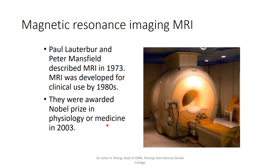Let's move on to magnetic resonance imaging, which also uses a gantry and the patient has to lie down in it. This was first described by Paul Lauterberg and Peter Mansfield in 1973, and it was developed for clinical use only in the 80s. They were given the Nobel Prize for Physiology and Medicine in 2003.